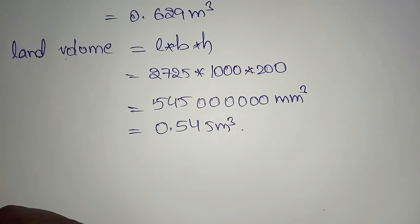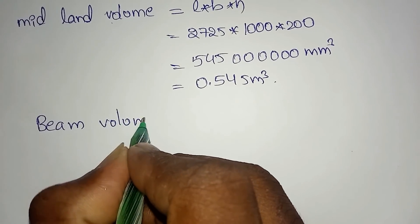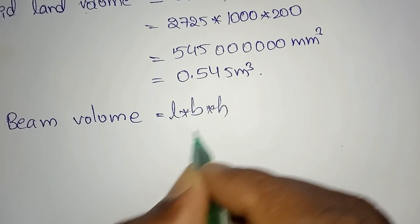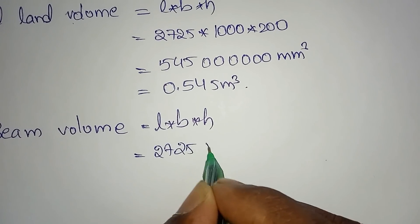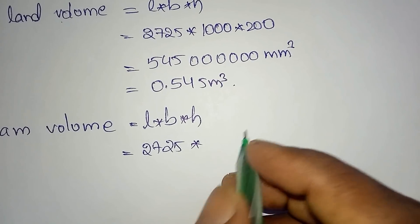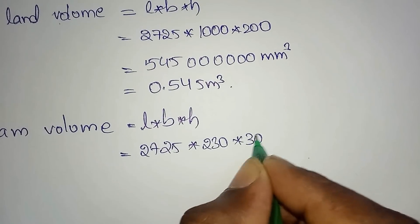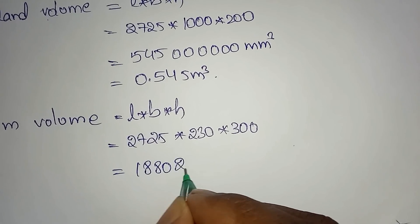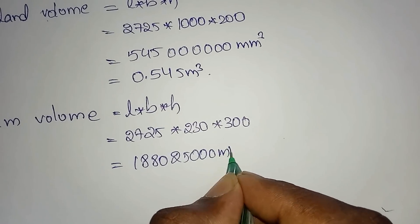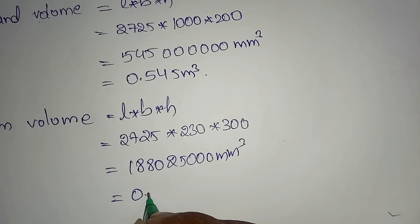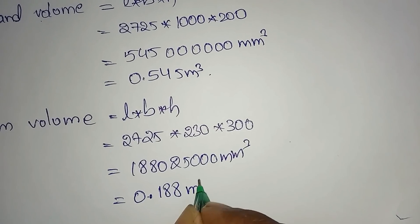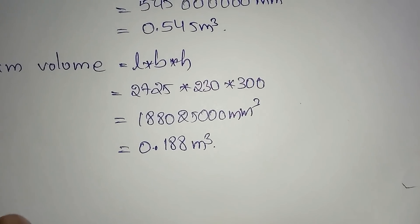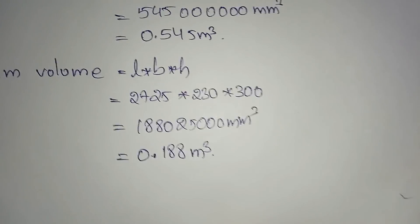Beam volume using L×B×H. Length is same: 2725. The value is 0.188 meter cube. And next, second flight.